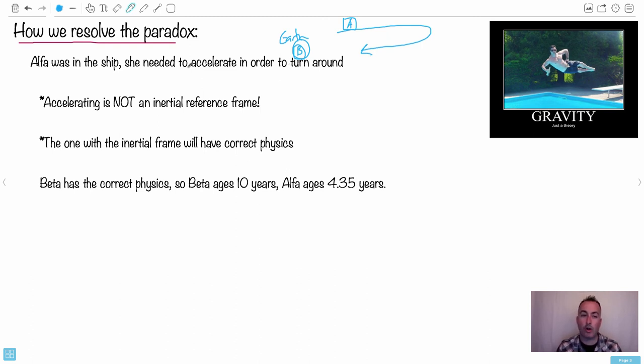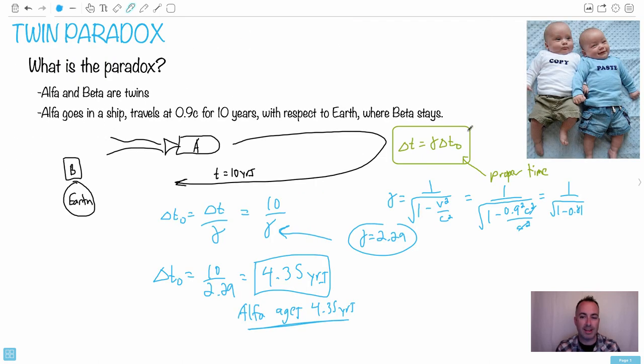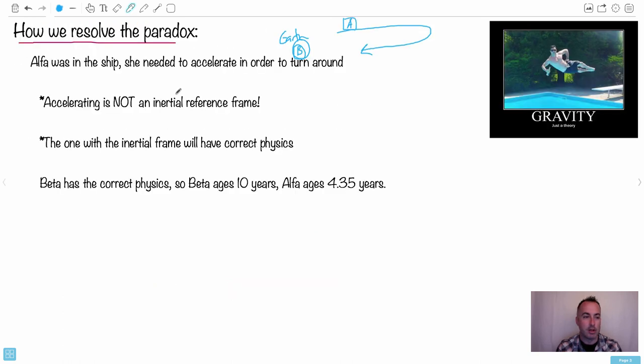So remember carefully that we talked about all this special relativity. All these rules here only work in inertial reference frames. In other words, non-accelerating frames. Now, the accelerating frame is not an inertial reference frame. This is key. In other words, Alpha does not, basically her physics don't work. So basically, we could say that the one with the inertial frame will have the correct physics.